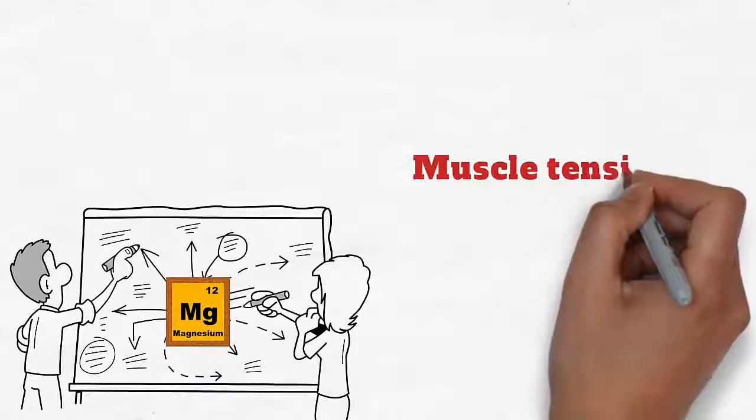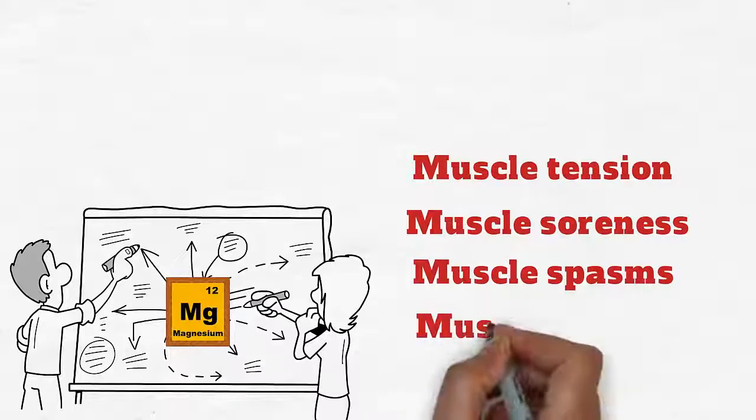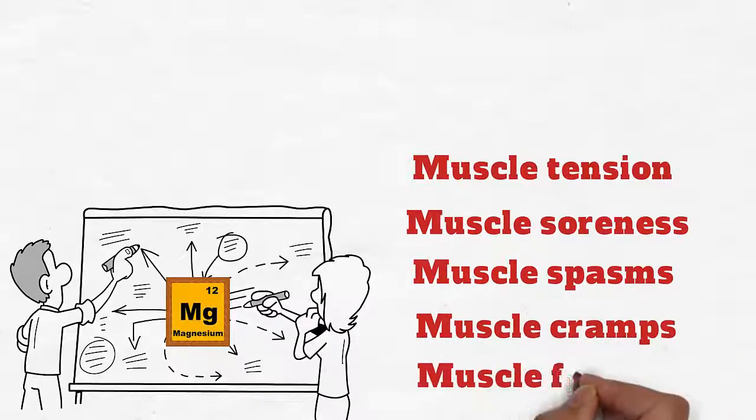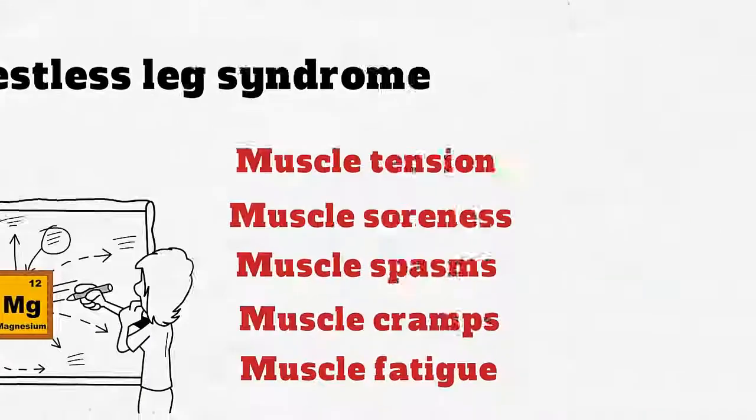Magnesium deficiency can cause muscle tension, muscle soreness, muscle spasms, muscle cramps, and muscle fatigue, which characterize restless leg syndrome.